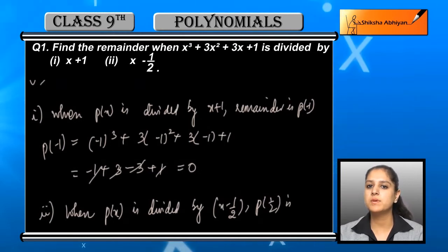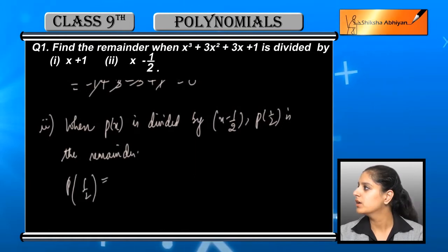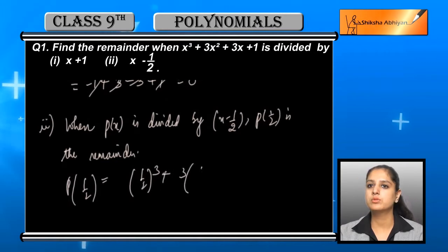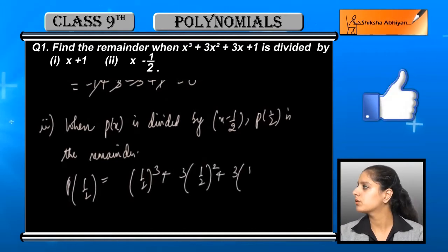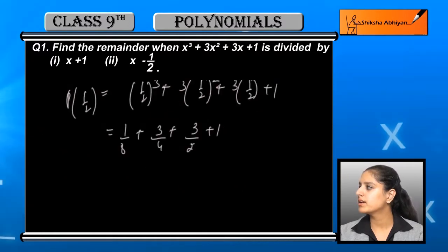We substitute x = 1/2 into p(x), which equals (1/2)³ + 3(1/2)² + 3(1/2) + 1. Further solving, we get 1/8 + 3/4 + 3/2 + 1.